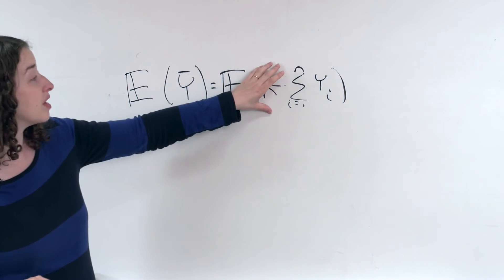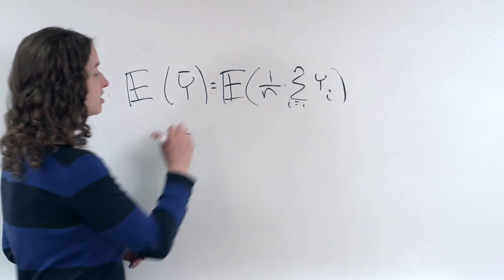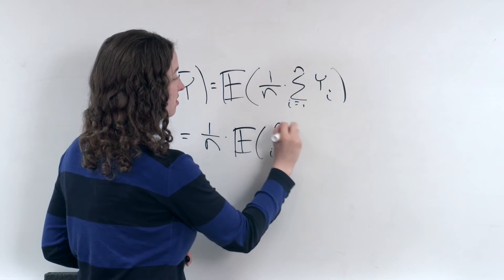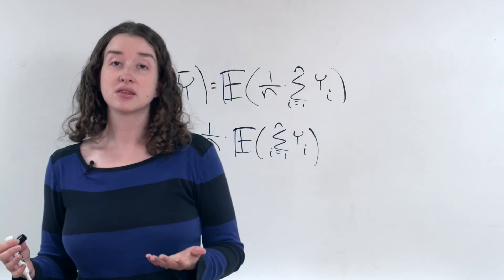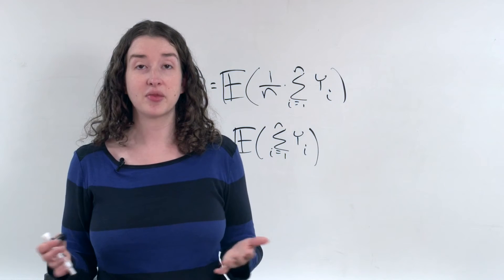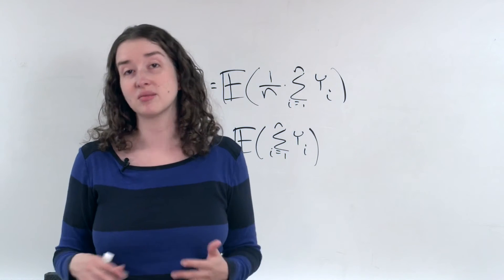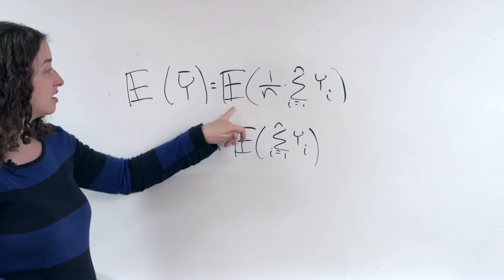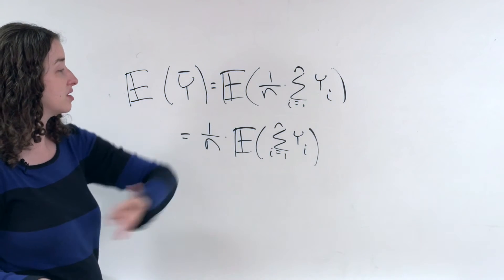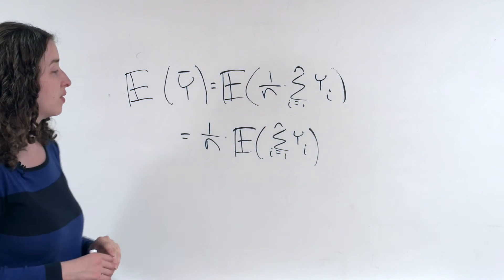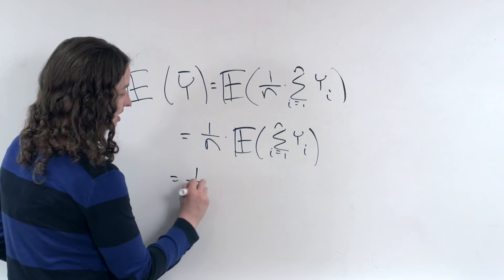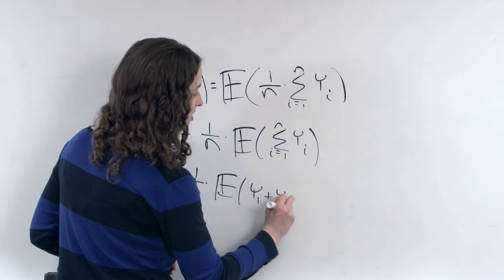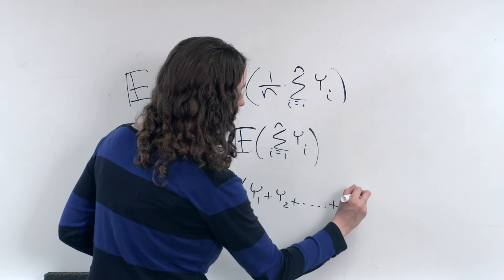The expected value of some number times the quantity we're interested in is equal to 1 over n times the expected value of that quantity. In other words, if I multiply every woman's height by 3 and take the mean of those, it'll be equal to 3 times 65. Same thing here, except instead of 3, I have 1 over n. So this is the same as 1 over n times the expected value of y1 plus y2 plus all the way up to yn.